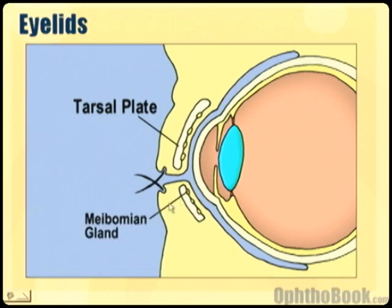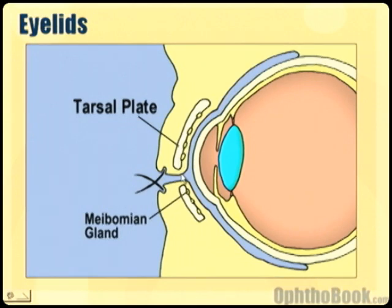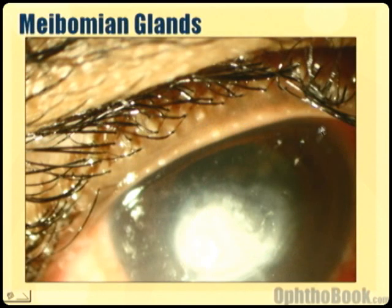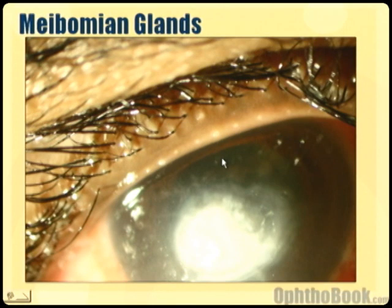Inside the tarsal plate are the meibomian glands. The glands actually sit inside of the plate and they squirt oil through little pores right here at the base of the eyelids into the tear film. If we take a photo, we can see little pores right along the edge of the eyelids, and oil is squirted out through these pores into the tears. This oil is really important to keep the tears from evaporating too quickly.